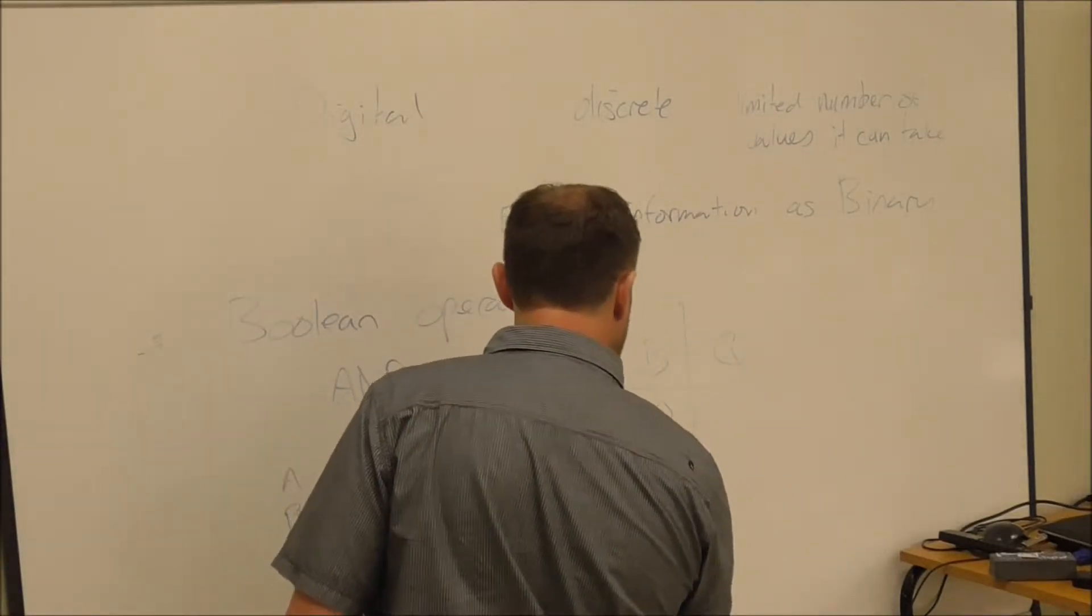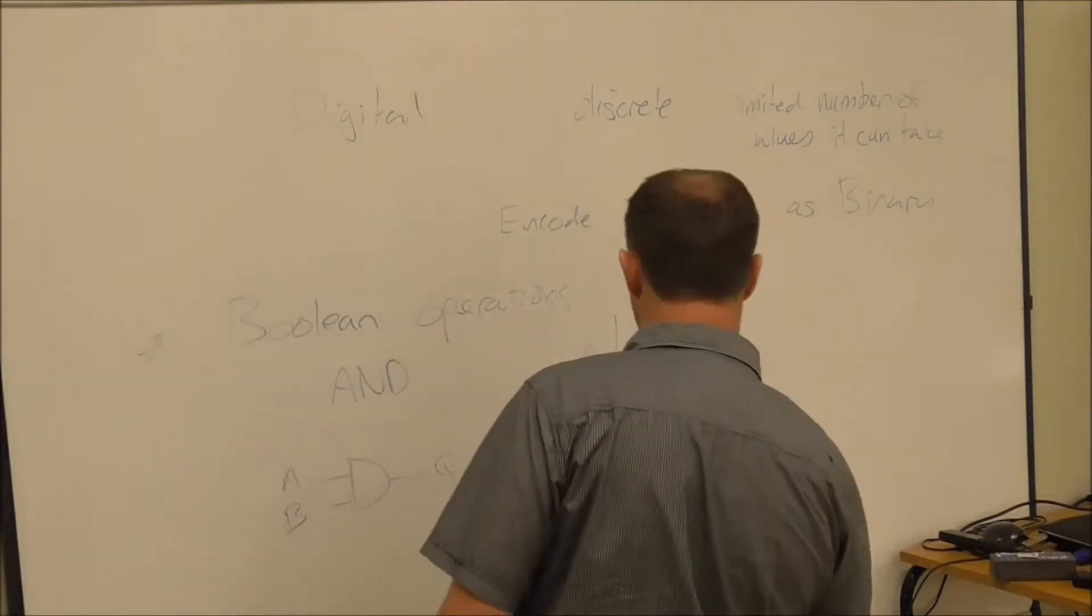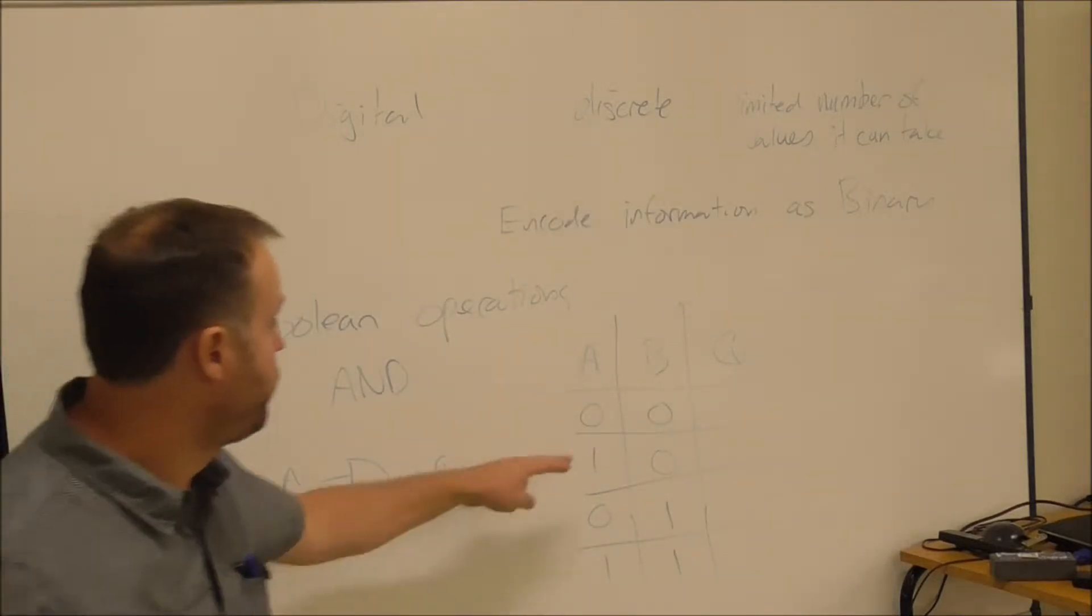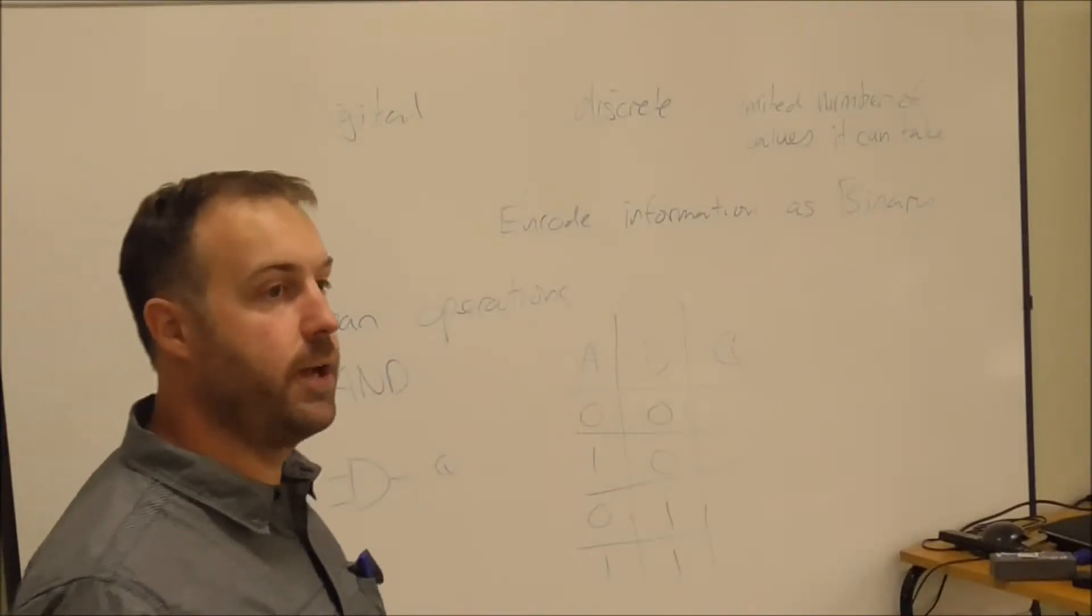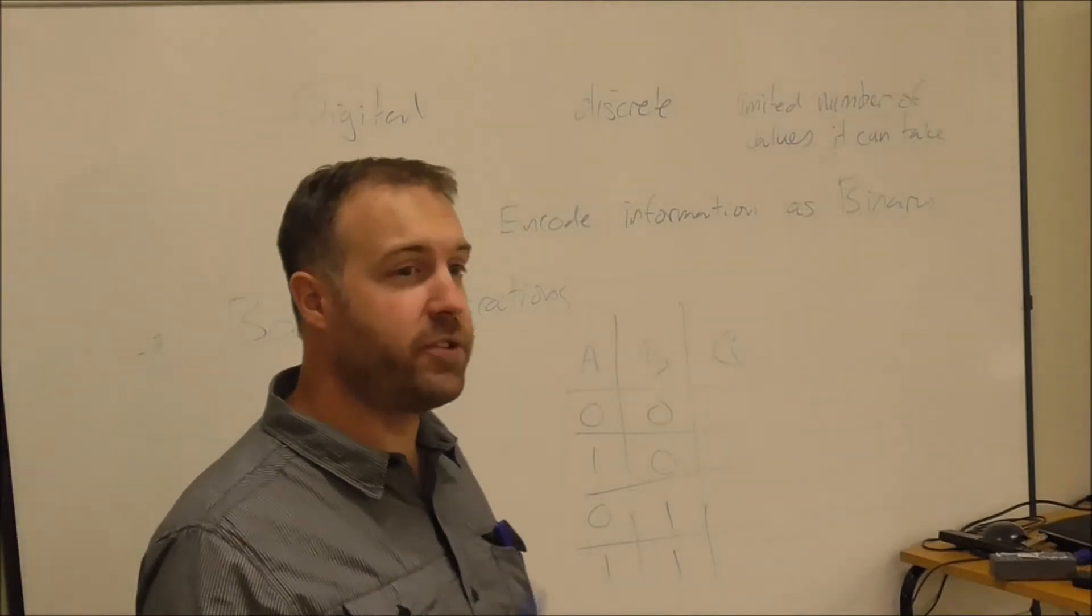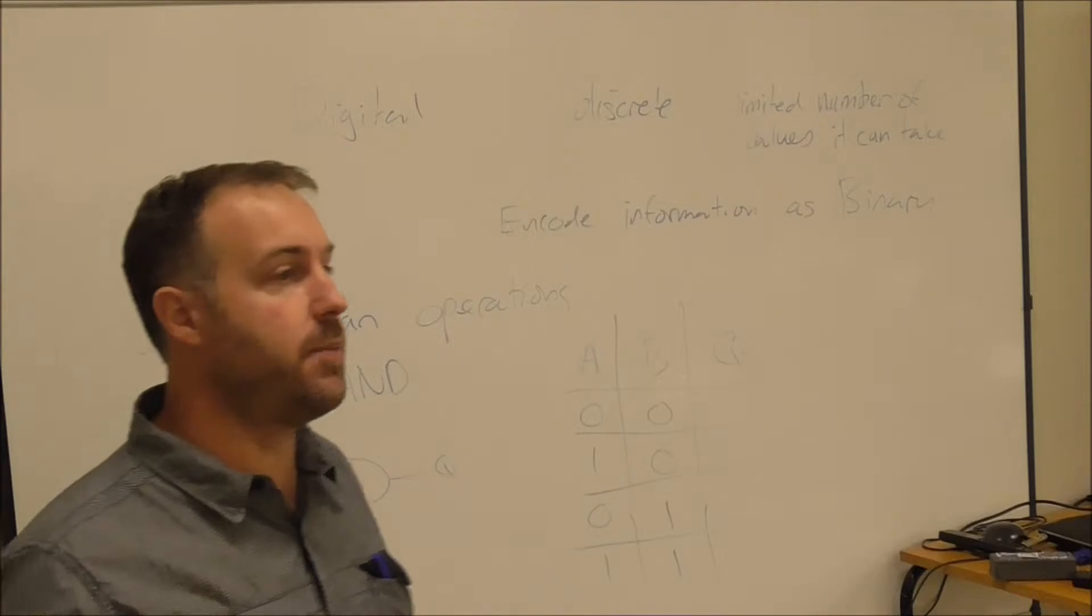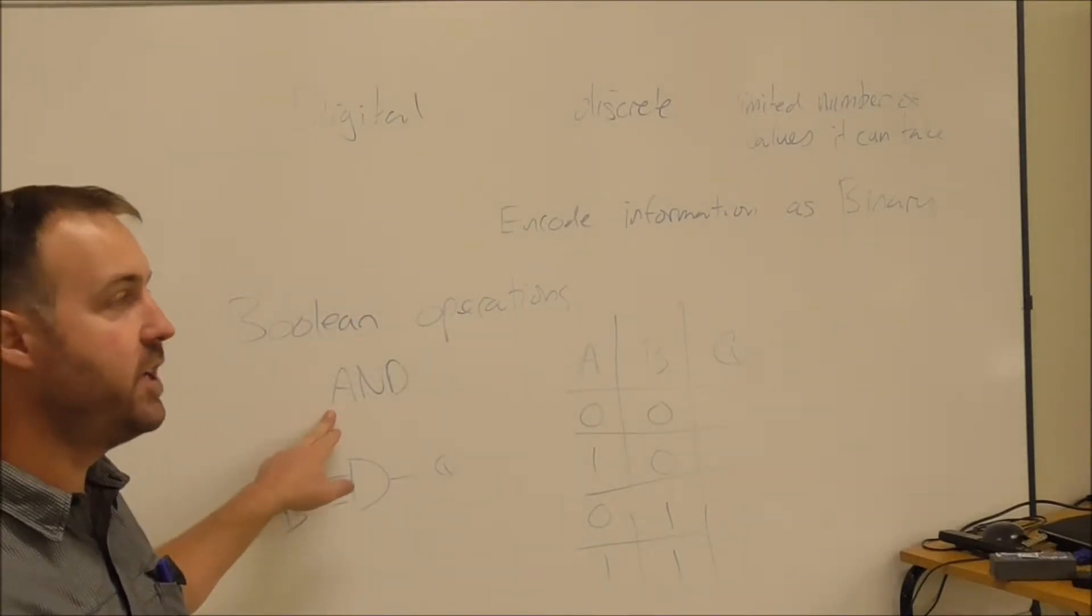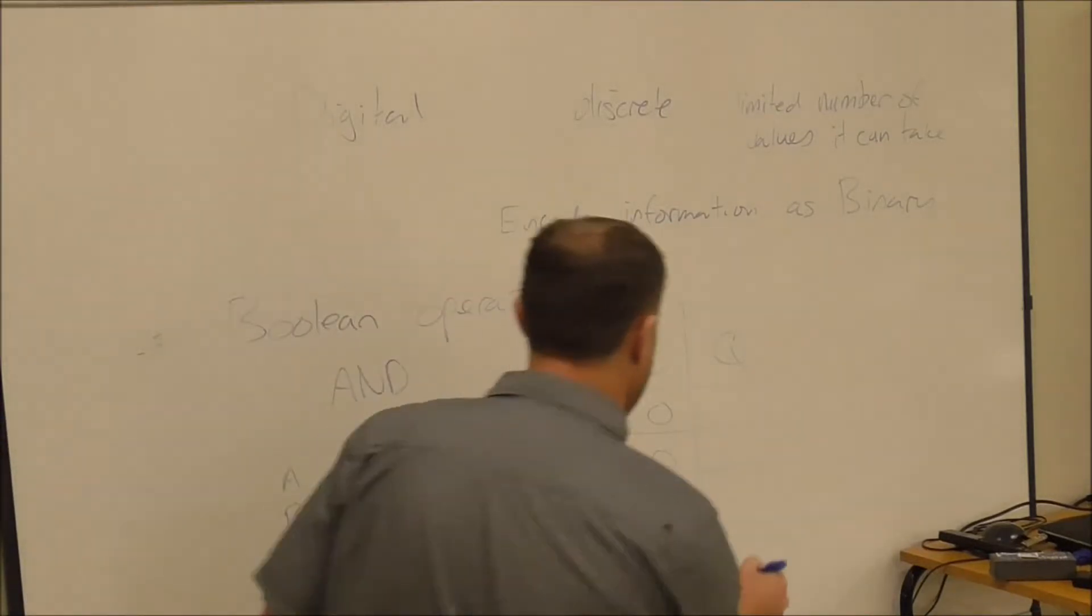And for an AND gate, we can talk about true and false. True being one, false being zero. I can talk about it as a truth statement, hence the truth table. So if A and B are both true, then the outcome is true, hence the AND gate. If A and B are both one, the outcome will be one, or the output will be one.